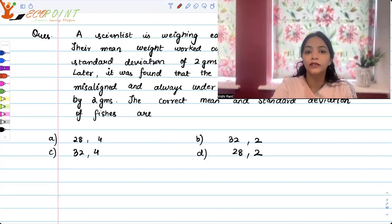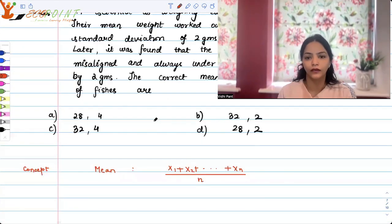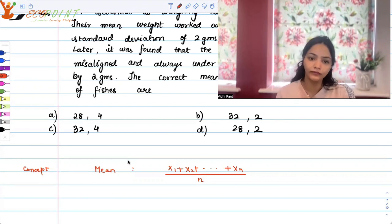So the concept that is being used here is the concept of mean and standard deviation. Now if you have n observations, the mean or average is x1 plus x2 till xn. You add the observations and divide by n.